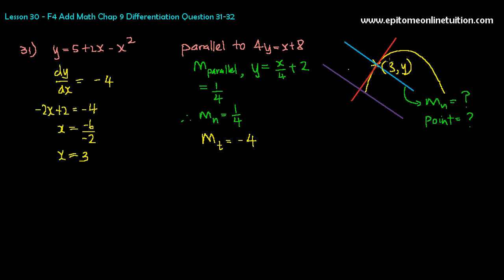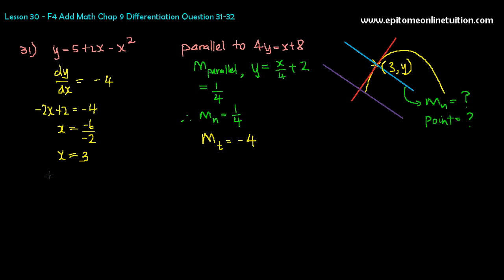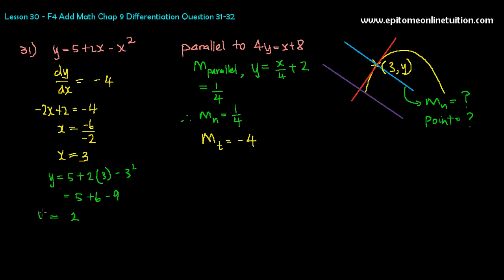So you found x. Now you have to find y. In order to find the y-coordinate, you always substitute x into the original curve, because this is the only equation with y in it. So y is equal to 5 plus 2 times 3 minus 3 squared. That's 5 plus 6 minus 9, which equals 2. So y is 2.